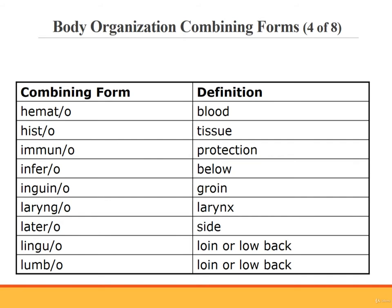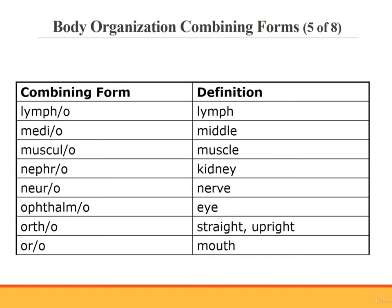Histo. Immuno. Infero. Inguino. Laryngo. Latero. Lingulo. Lumbo. Lympho. Medio. Musculo. Nephro, meaning kidney. Nephromegaly is a medical term which uses the combining form nephro. This term means enlarged kidney. Neuro means nerve. An example of a medical term which uses the combining form neuro is neuroplasty. Neuroplasty means surgical repair of a nerve.